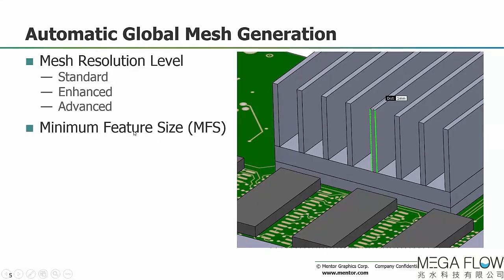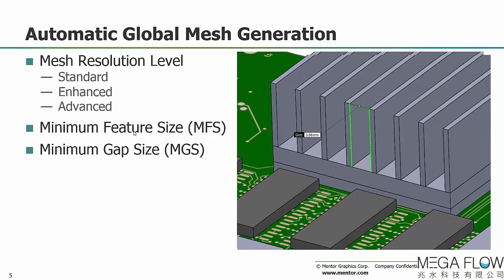The other control that affects global mesh generation is the minimum feature size. For example, for the heatsink smart part, the minimum feature would typically be the thin fin thickness, and the minimum gap size would be the distance between the fins. As you build a model, Flowtherm XT looks at all the geometry, determines the smallest feature that needs to be resolved, and uses that as the setting for the global mesh generation process.